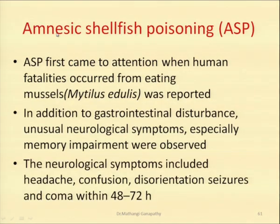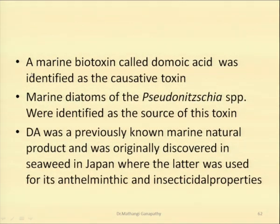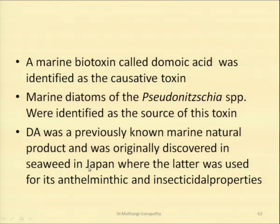Amnesic shellfish poisoning, or ASP, first came into attention when human fatalities occurred while eating mussels, Mytilus edulis. In addition to gastrointestinal disturbances, unusual neurological symptoms — especially memory impairment — were observed in all patients. The neurological symptoms included headache, confusion, disorientation, seizures, and coma, all within 48 to 72 hours of consumption of the mussels. A marine biotoxin called domoic acid was identified as the causative toxin. Domoic acid is produced by marine diatoms, the Pseudonitzschia species. It was originally discovered in seaweed in Japan, where it was used for its anti-helminthic and insecticidal properties, but that it could cause disease was a later discovery.